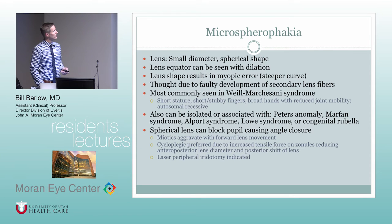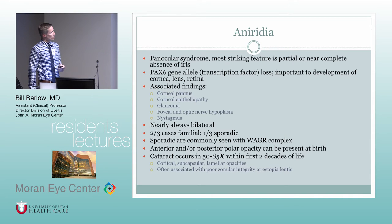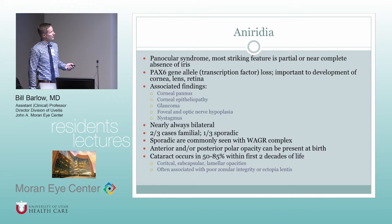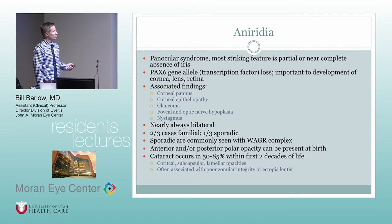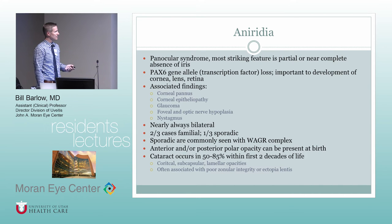Aniridia is associated with PAX gene allelic loss. It's usually a panocular syndrome, with the most striking feature being near-absence of the iris. Associated findings include corneal pannus and epitheliopathy, possible endothelial dysfunction, and glaucoma due to developmental anomalies of the trabecular meshwork. Optic nerve hypoplasia and nystagmus can occur due to poor visual potential. It's almost always bilateral; about two-thirds of cases are familial, one-third sporadic. Sporadic cases are often seen with the WAGR complex. Focal polar opacities and cataracts are very common within the first two decades of life.